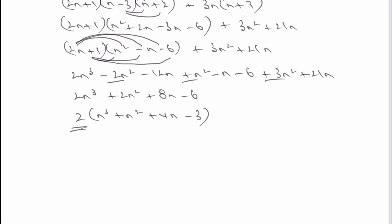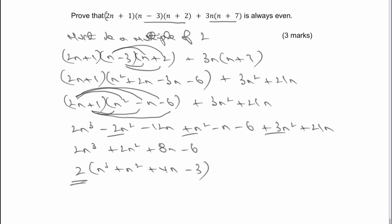So I can write that as 2 brackets (n cubed plus n squared plus 4n minus 3). And it just means then if you want to write a line in there that says as 2 as a factor, then it must be an even term. That'd be absolutely fine. I hope that's been useful to you.